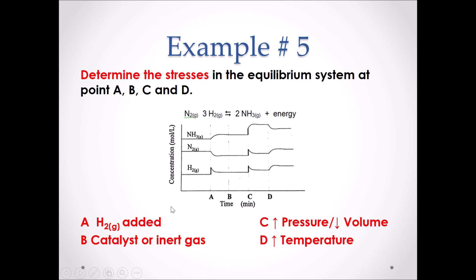So to recap: at point A, we have added H2 gas. At point B, we have not changed the equilibrium system, so it could be a catalyst or an inert gas. At point C, we have increased the pressure and decreased the volume. And finally, at point D, we have increased the temperature.